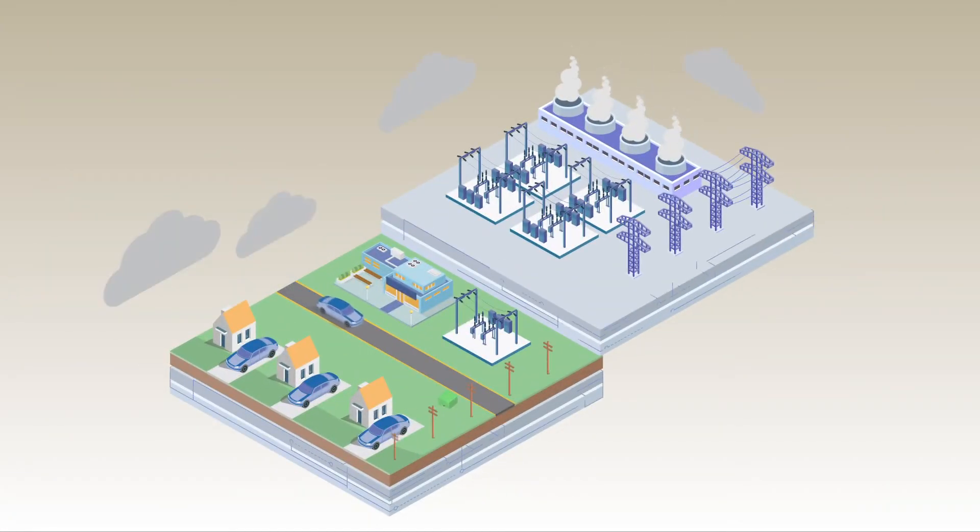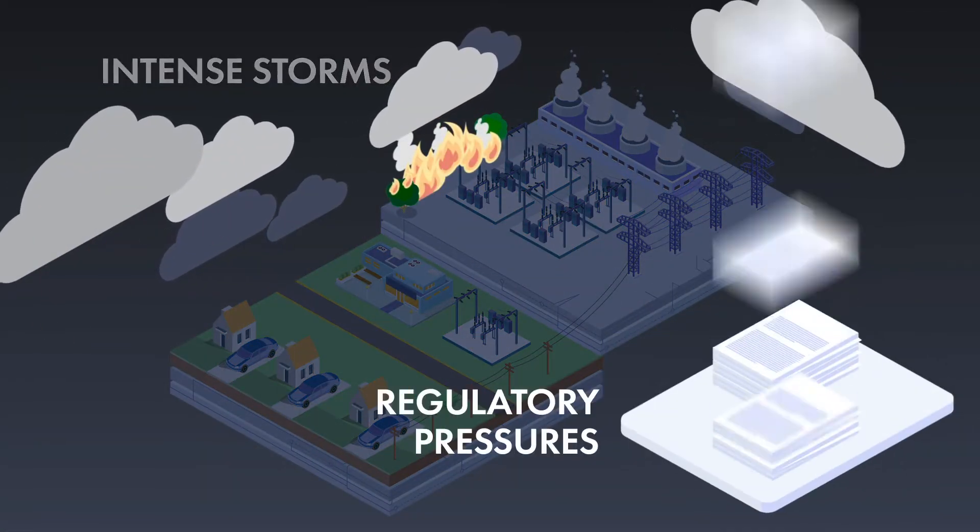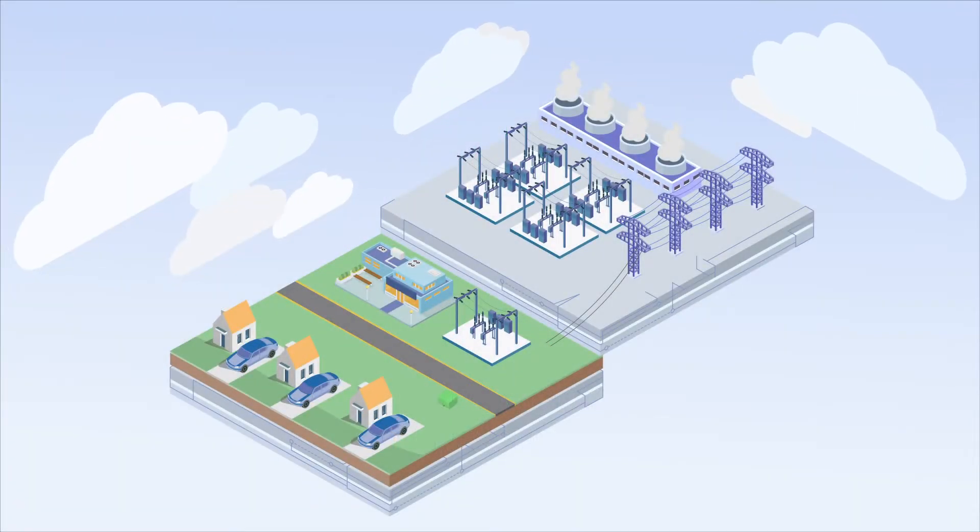The electric grid is in a period of transition and digital transformation as utilities respond to new demands for reliability amidst increasingly intense storms, wildfires, regulatory pressures, and new decarbonization goals.